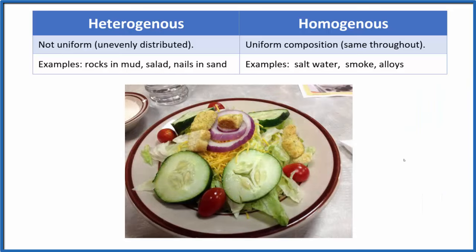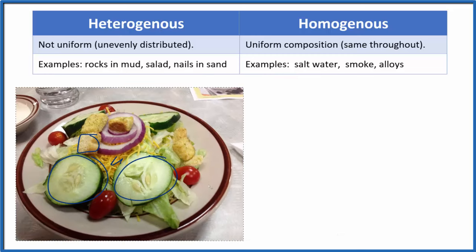How about a delicious salad? Since we have things separate in clumps — cucumbers, croutons, and cheese — it's all in clumps, not evenly distributed. We say that salad is heterogeneous.